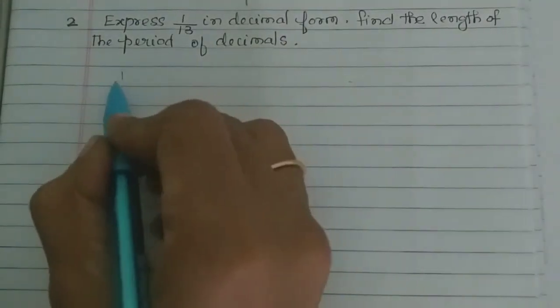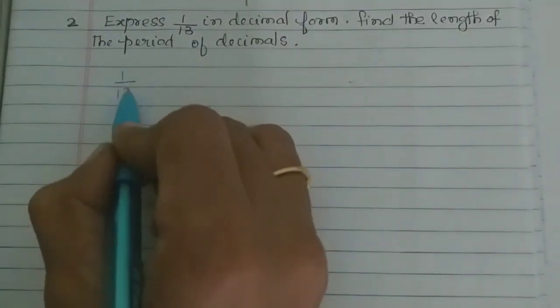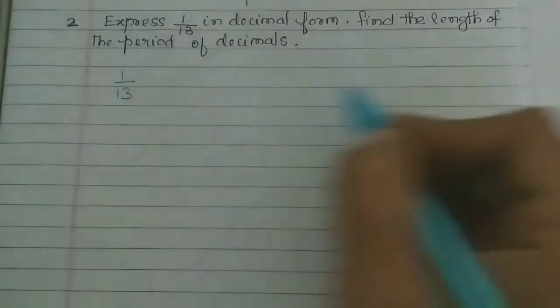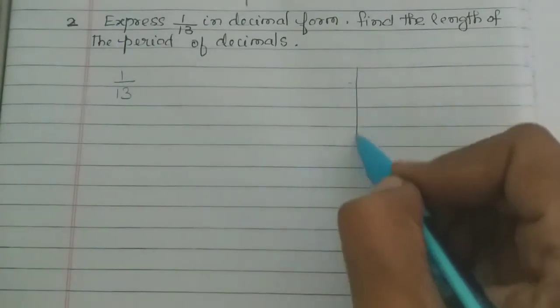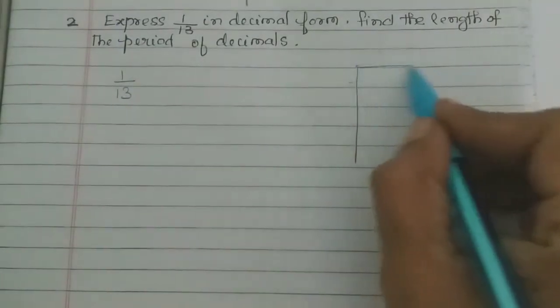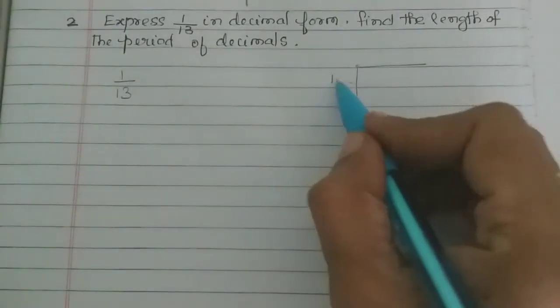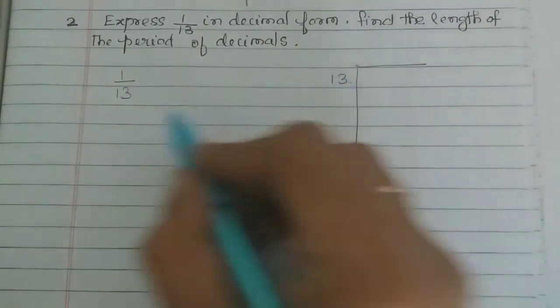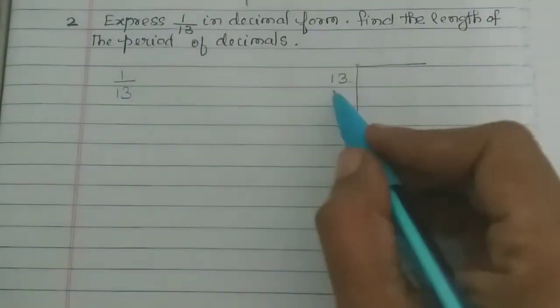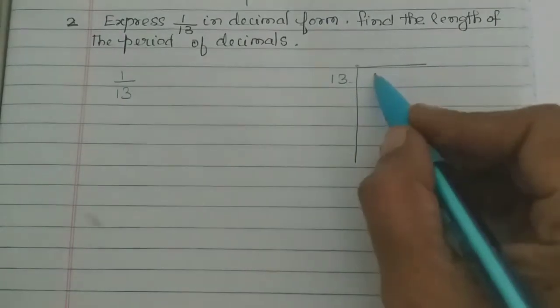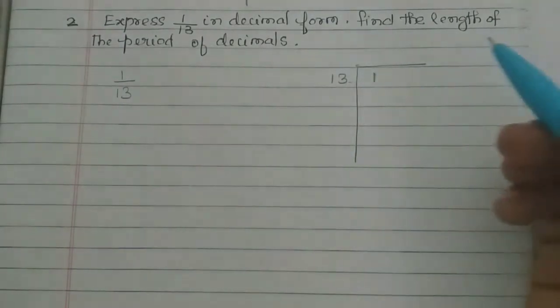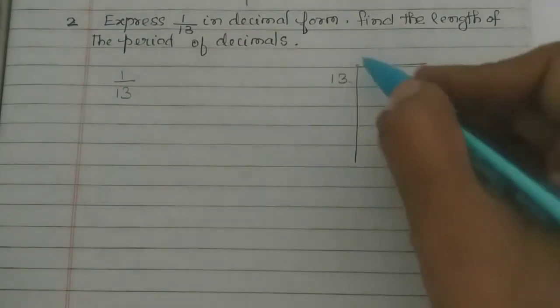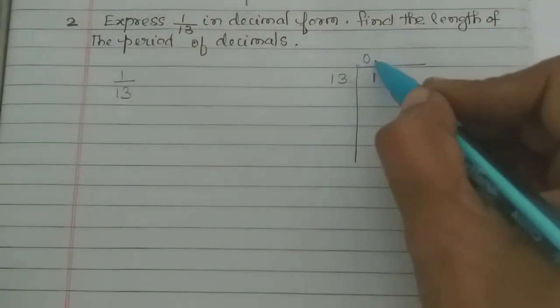So, 1 by 13 in decimal form — we divide by 13. If we divide the denominator in decimal form, then we divide 1 by 1. Now we say 0 point...